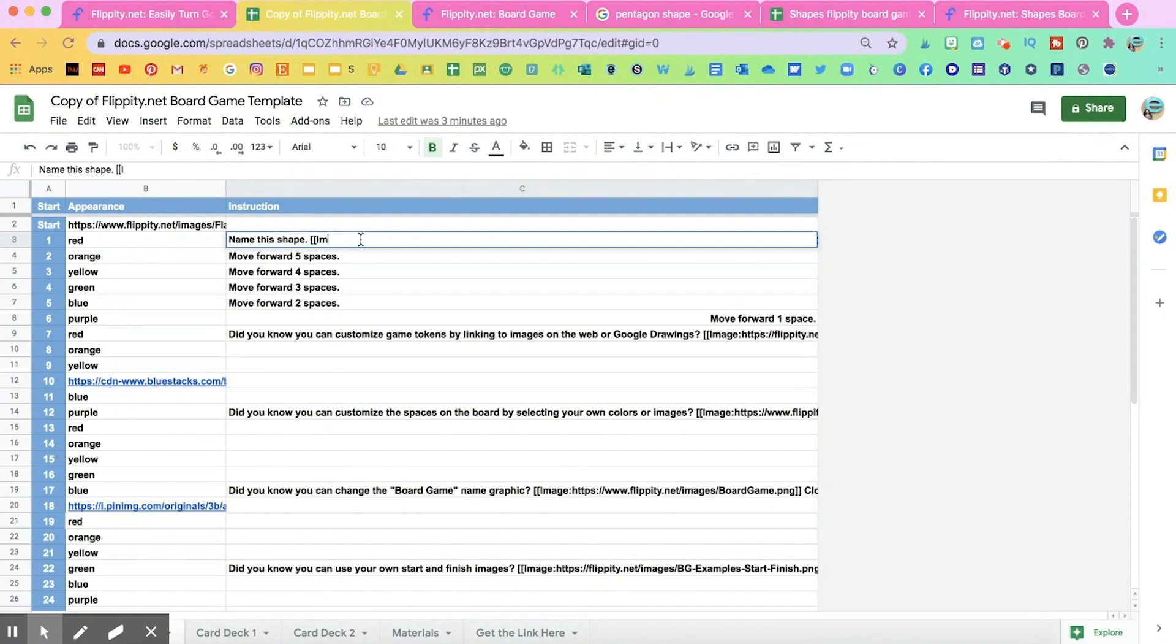And then we're going to add two squared brackets. Like that. And it's going to say image. I'm going to type image and a colon. And now we're going to paste that link of the pentagon. And I'm going to close that bracket two times again. Two times. Enter.